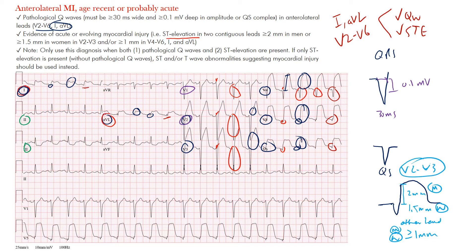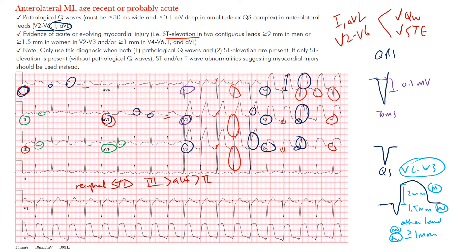In the inferior leads — II, III, and aVF — you see reciprocal changes. The most prominent ST segment depression is in lead III, followed by aVF, and then slightly in lead II. This ST segment depression represents reciprocal changes rather than a separate inferior injury.